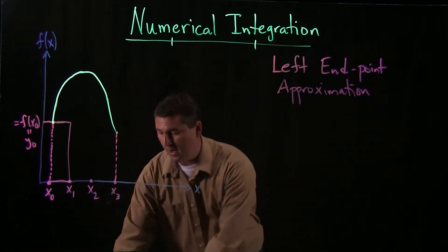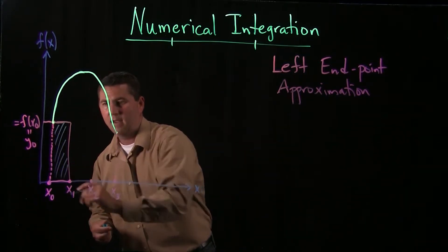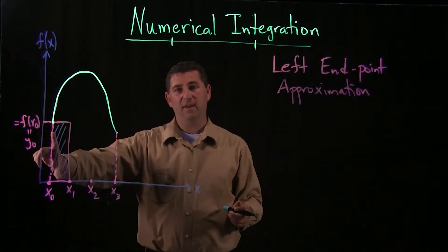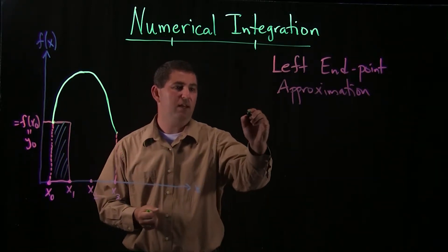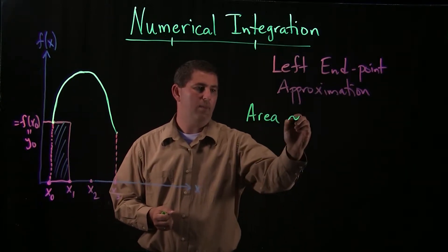So this gives me a rectangle. That rectangle has some area, and of course, we know how to find the area of a rectangle. It's the base times the height. So let's try writing down the beginnings of an approximation.